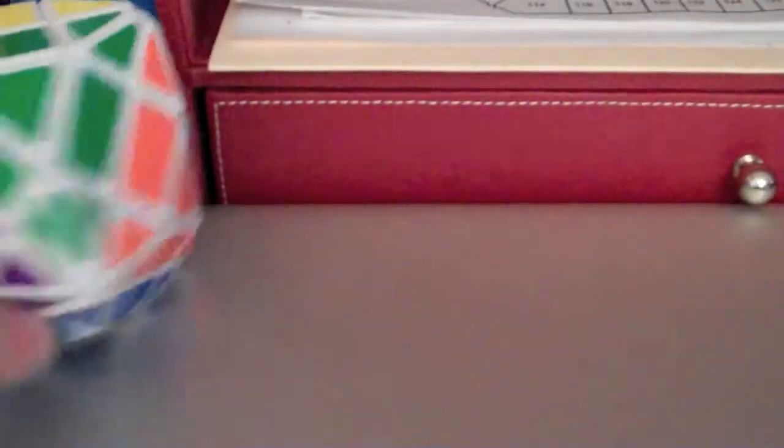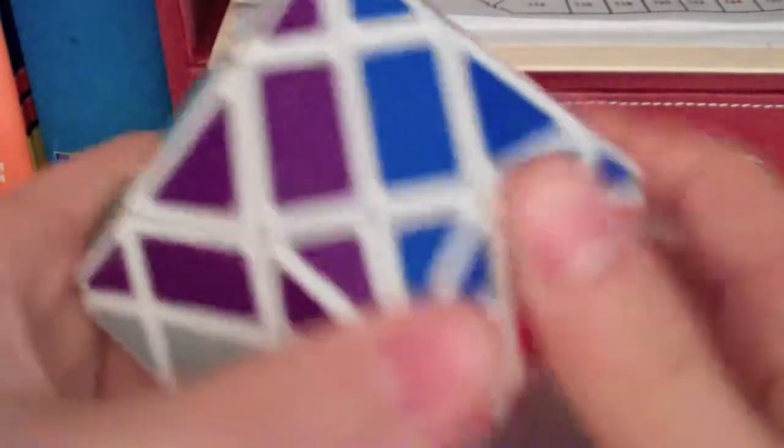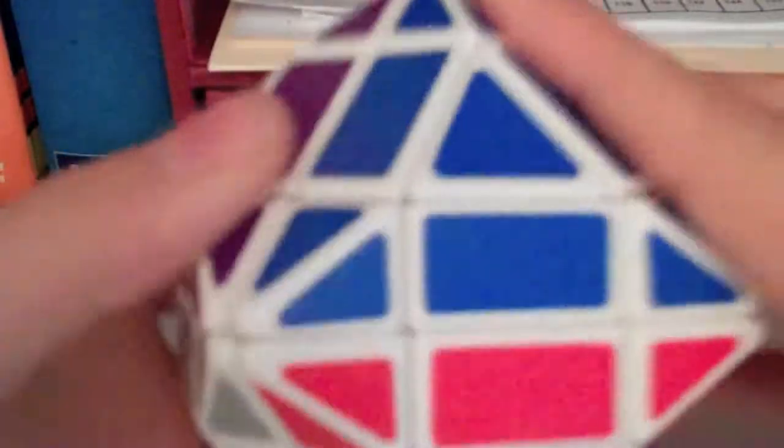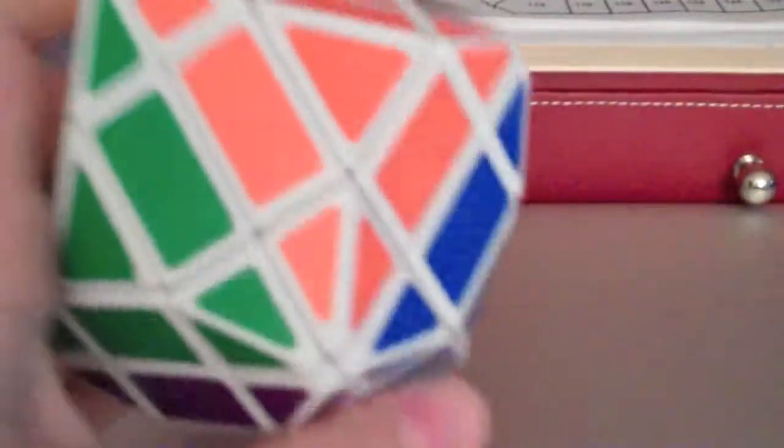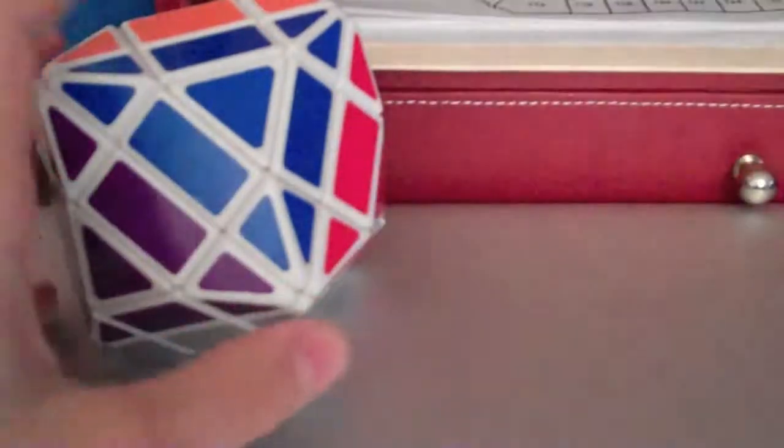However, this is everything much better. The only thing is they both have a ball core, so neither of them turn perfectly. But this definitely turns much better. If you could figure out a way to remove the lockups, then this puzzle turns much better than this one. And you can see, it's very still very stiff. It locks up. And overall, it's just not a good quality puzzle.